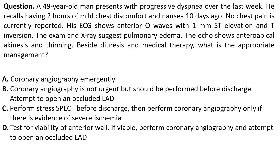Next question. A 49-year-old man presents with progressive dyspnea over the last week. He recalls having two hours of mild chest discomfort and nausea 10 days ago. No chest pain is currently reported. His ECG shows anterior Q waves with 1-millimeter ST elevation and T inversion. Exam and X-ray suggest pulmonary edema. Echo shows anteroapical akinesis and thinning. Beside diuresis and medical therapy, what is the appropriate management? A. Coronary angiography emergently. B. Coronary angiography — not urgent but performed before discharge. C. Perform stress SPECT before discharge, then perform coronary angiography only if there is evidence of severe ischemia. D. Test for viability of the anterior wall; if viable, perform coronary angiography and attempt to open an occluded LAD.